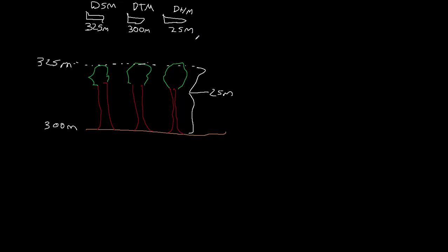Just to quickly recap: the digital surface model includes surface features, so it's going to grab the elevation including the surface — that would be 325, the top of the surface feature. The DTM ignores surface features, so it grabs the elevation of just the ground, which is where 300 came from. And the digital height model grabs the height of the surface features, which is the difference — 25 meters.